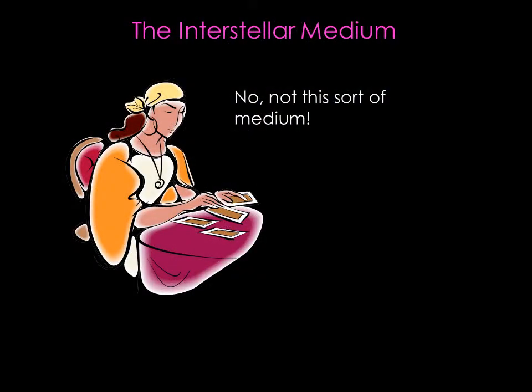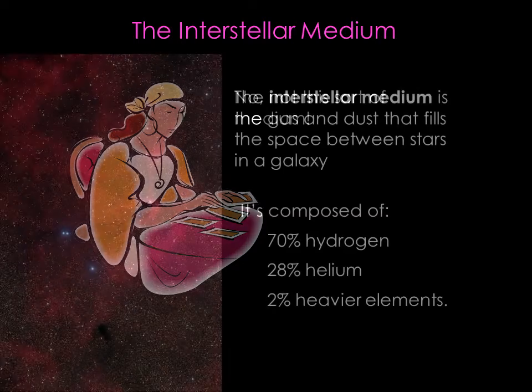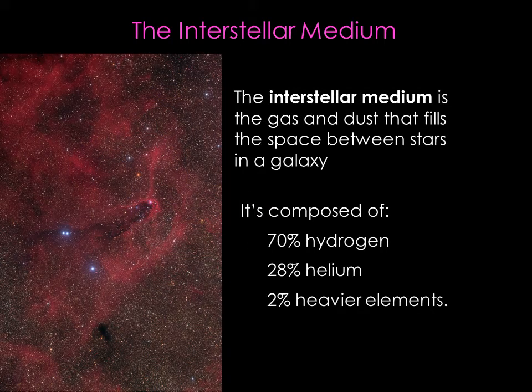We often think of space as being empty. It certainly has less stuff than what we're used to on Earth, but it's not completely empty — there's at least a little gas and dust in between the stars. This gas and dust is referred to as the interstellar medium. It's mostly helium and hydrogen with a small amount of heavier elements.